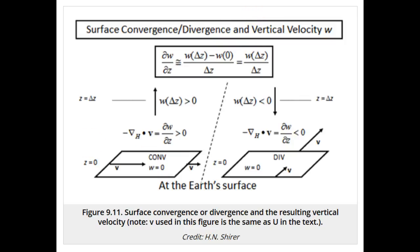We will look first at divergence near Earth's surface. If there is horizontal divergence, then the air must go somewhere and it cannot go down, so it goes up.